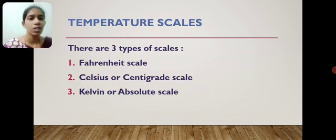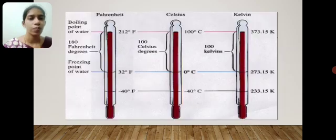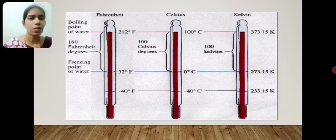Temperature scales. There are three types of scales: Fahrenheit scale, Celsius or Centigrade scale, Kelvin or Absolute scale. These are the images for Fahrenheit, Celsius, and Kelvin scale.